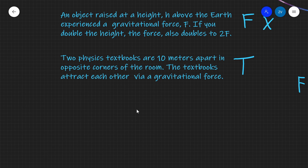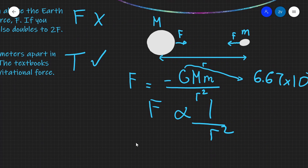The third statement — that two physics textbooks 10 meters apart in opposite corners of a room attract each other via a gravitational force — is true, because Newton's law says any two objects, no matter how big or small, if they possess mass they have a gravitational field and will attract each other. The minus sign in the equation is critical — it tells us this is an attractive force.